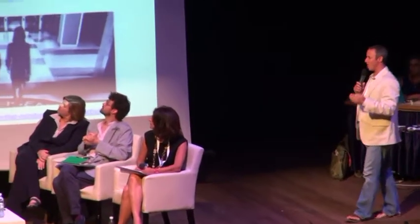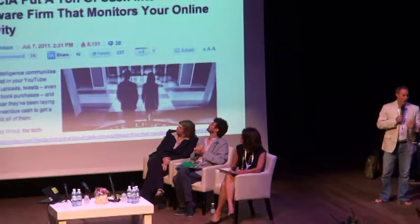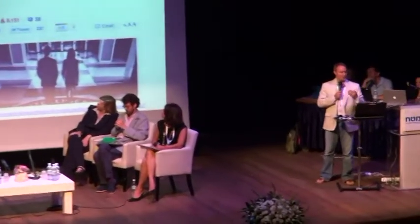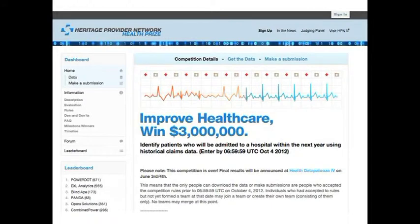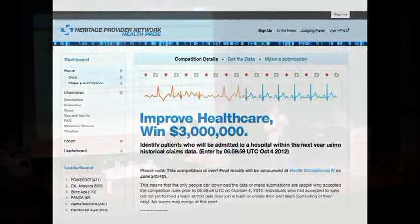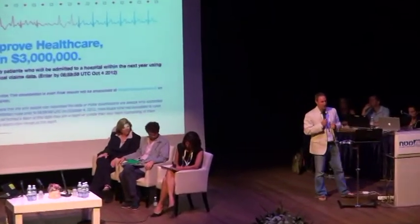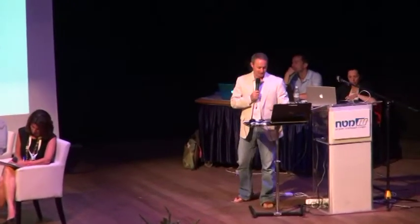You can see applications of this all over the place. The CIA, all intelligence operations around the world, looking for monitoring of online activity to try to predict who might do something that they would prefer that they don't do. This is a $3 million prize in healthcare, where the idea was, can you build algorithms to basically identify who is likely to end up in a hospital next year? And if you can figure that out, help us identify who will be in a hospital next year, maybe we can do something to prevent that. And for insurance companies, you can imagine that this would be a very valuable asset to have.